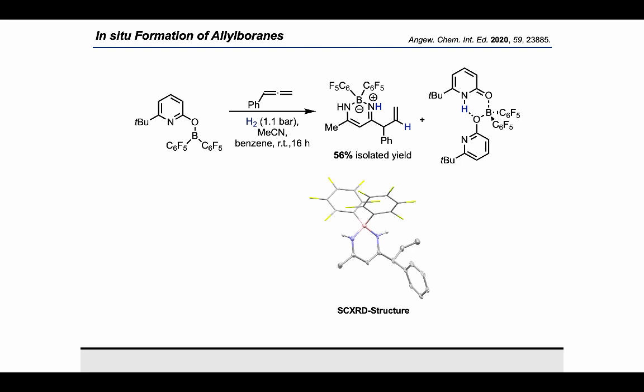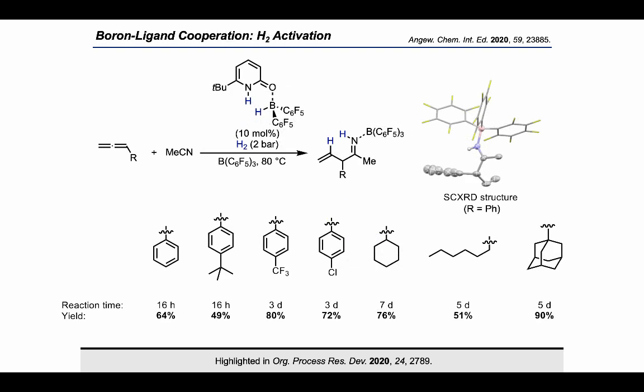To enable catalytic turnover, we added an additional Lewis acid to capture the primarily formed allyl imine prior to the formation of the beta-ketene-imine borane complex. With tris-perfluorophenyl borane as additional Lewis acid, we were able to devise a protocol for the allylation of nitriles that required only catalytic amounts of the pyridone borane complex. The allyl imines were isolated as their respective borane complexes.